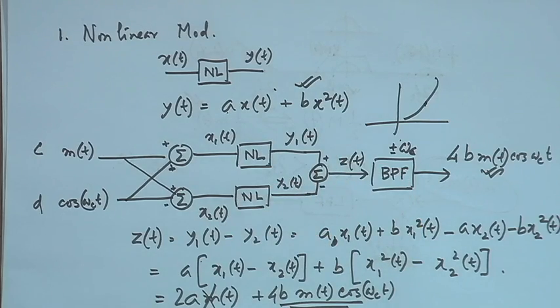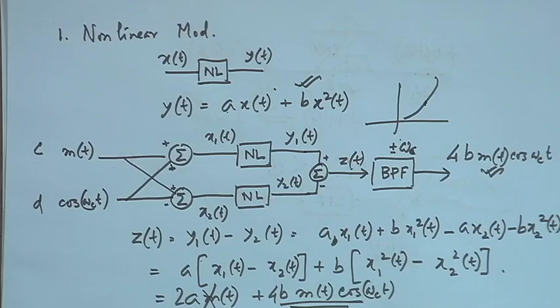We can realize a multiplier circuit using three op-amp adders and two properly biased non-linear devices to get the quadratic relationship, plus a band-pass filter which can also be designed using op-amps as an active filter. This is one way of achieving multiplication.